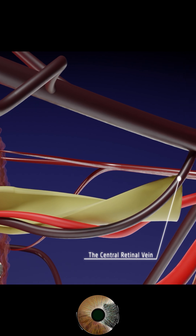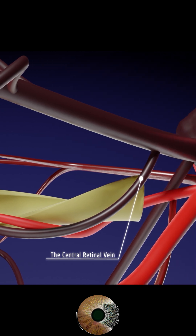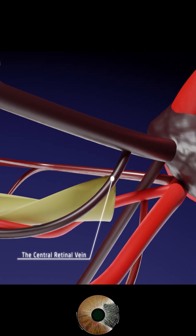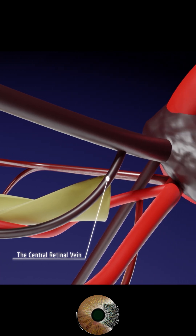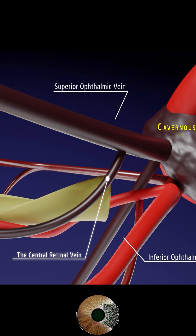The central retinal vein has more variability in its drainage pattern. In most cases, it drains directly into the superior ophthalmic vein, but in about 20-40% of people, it drains directly into the cavernous sinus.